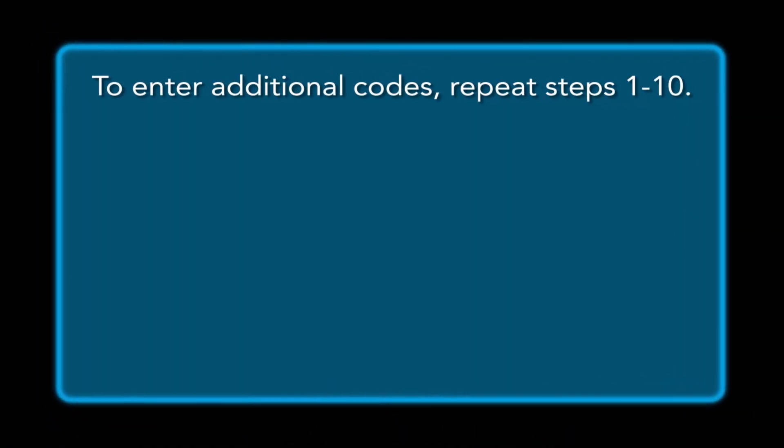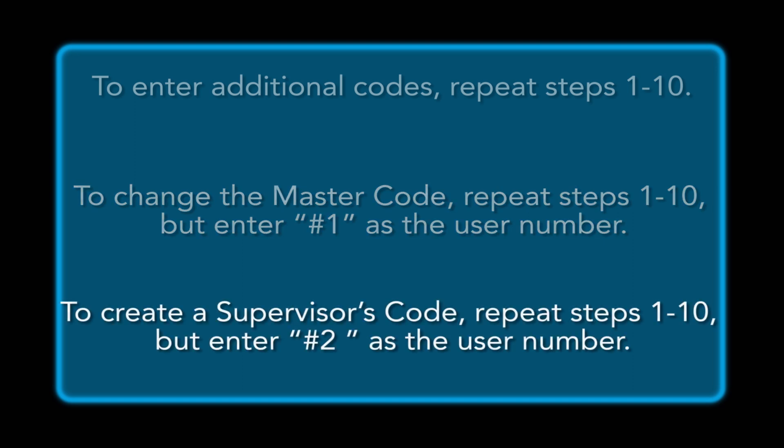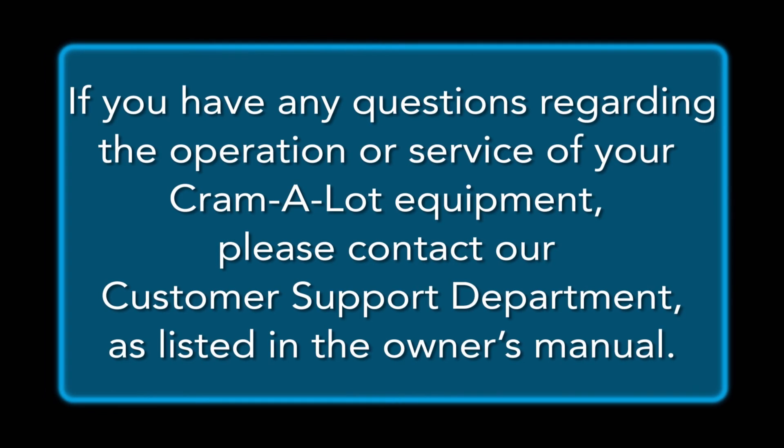To enter additional codes, repeat steps 1 through 10. To change the master code, repeat steps 1 through 10, but enter pound 1 as the user number. To create a supervisor's code, repeat steps 1 through 10, but enter pound 2 as the user number.